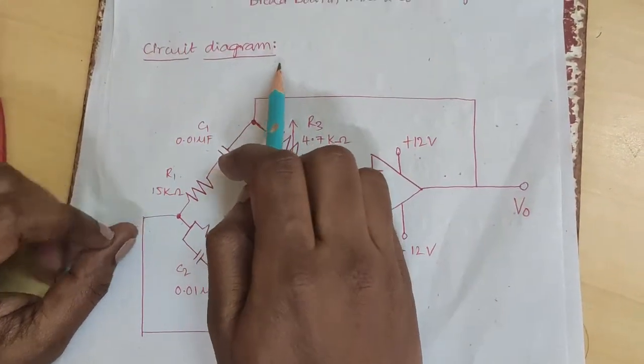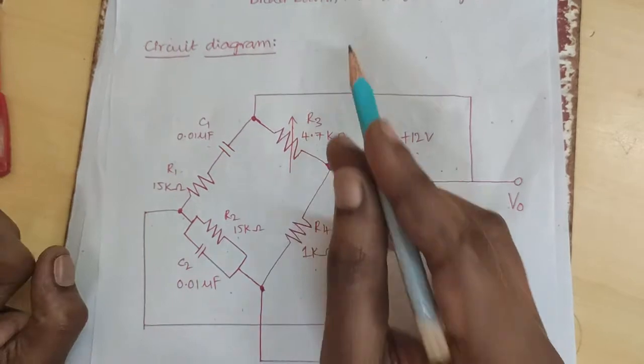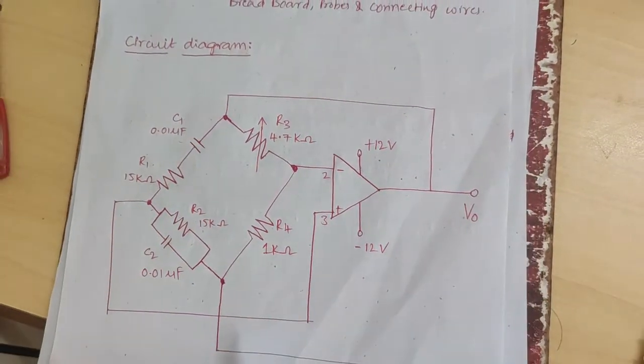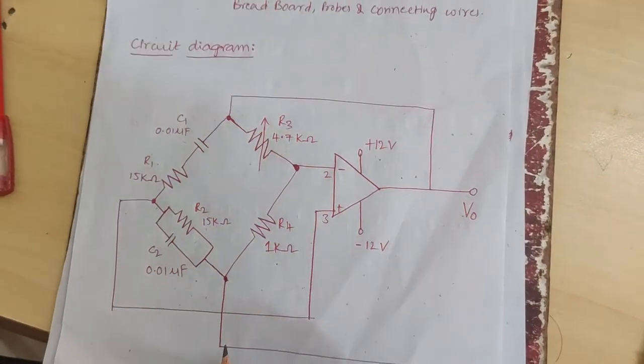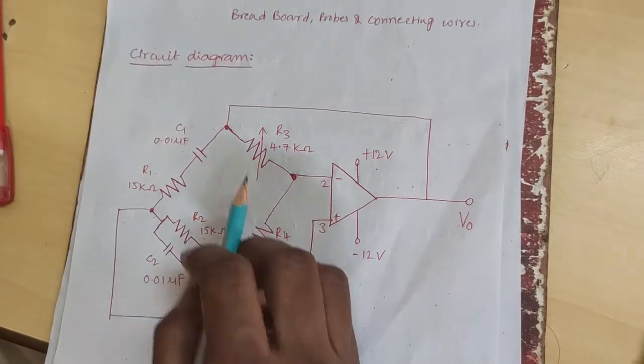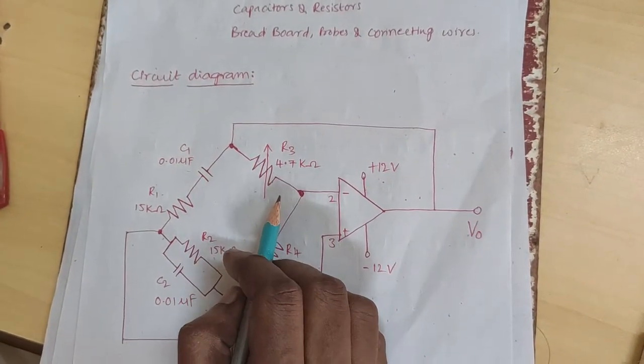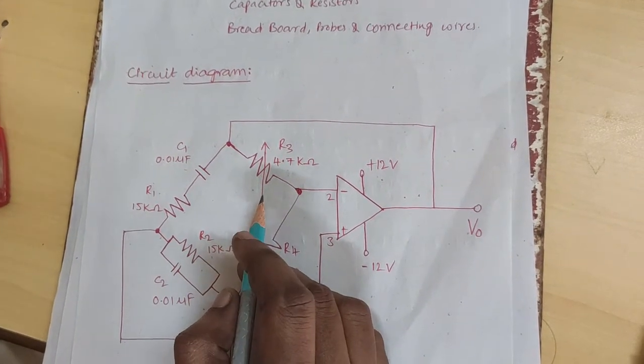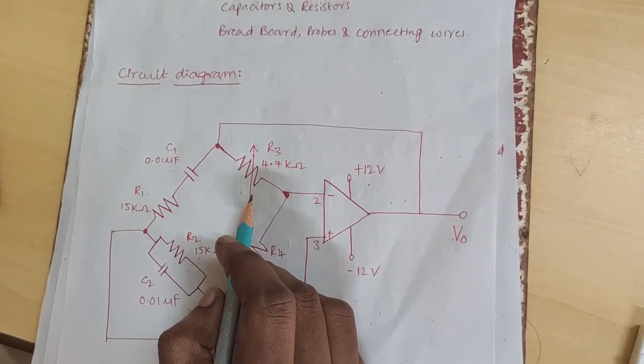This is the circuit diagram for Wien bridge oscillator using op-amp. Wien bridge oscillator is an audio frequency sine wave oscillator of high stability and simplicity.